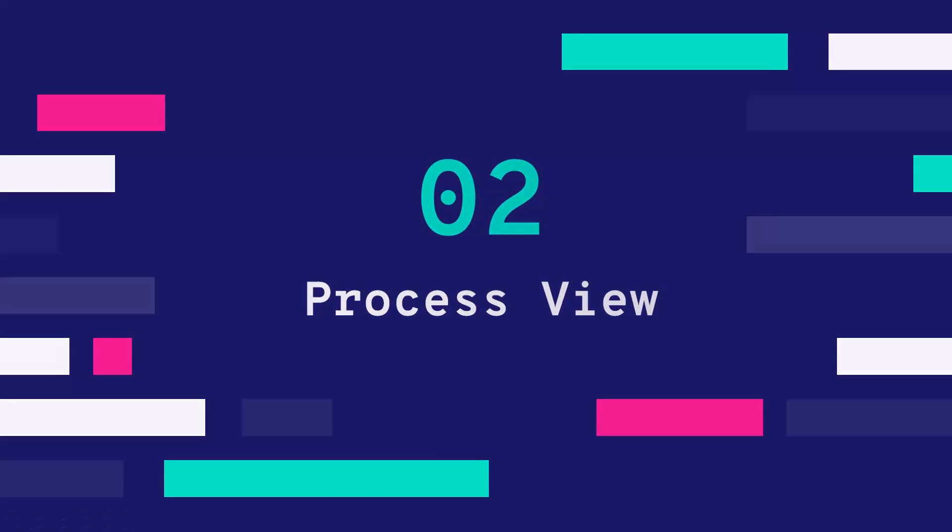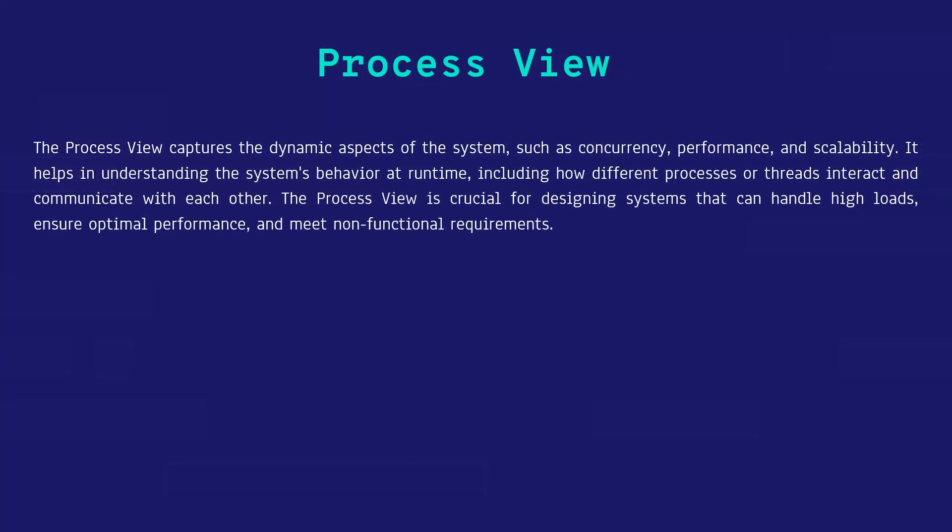The process view captures the dynamic aspects of systems such as concurrency, performance and scalability. It helps in understanding the system's behavior at runtime, including how different processes or threads interact and communicate with each other. The process view is crucial for designing systems that can handle high load, ensure optimal performance and meet non-functional requirements at runtime when your application is running in production.